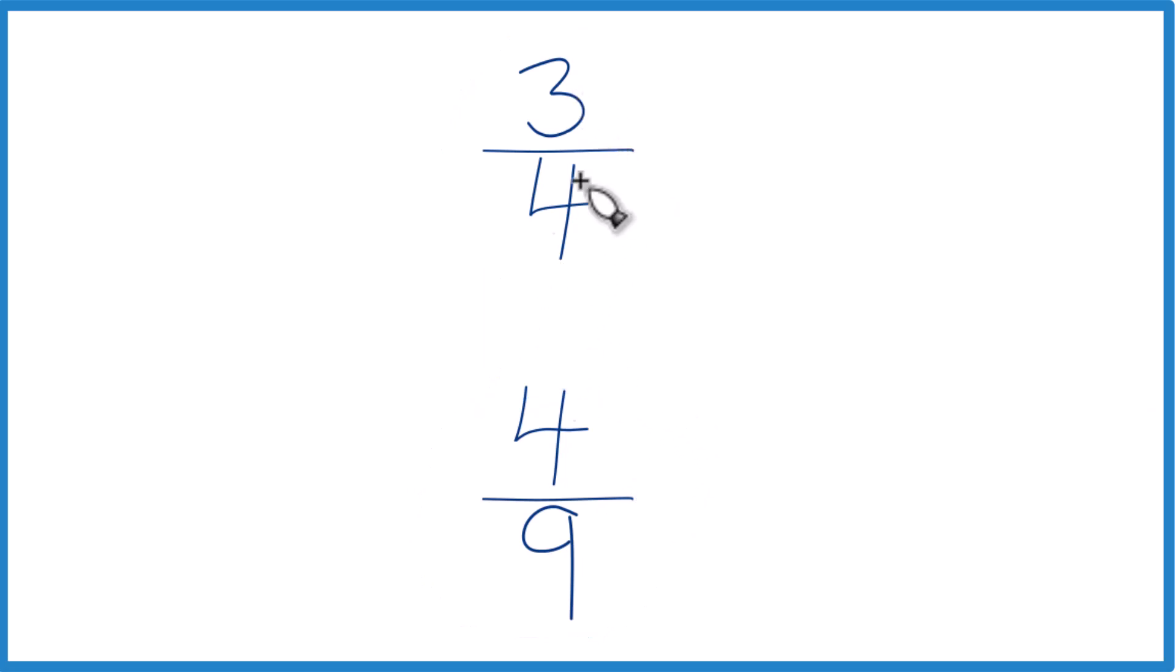So you could just use a calculator, divide 3 by 4, get a decimal, divide 4 by 9, get a decimal, and compare them. See which fraction is greater, 3 fourths or 4 ninths.